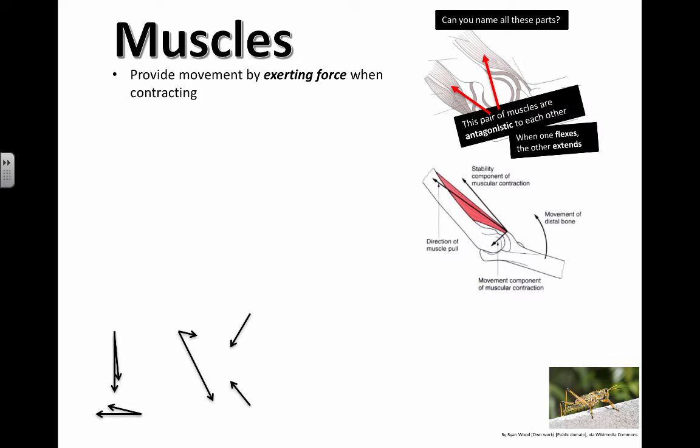Let's take a look at some of these things right here. So muscles, you already know, they provide movement by exerting force when contracting. So only when they actually contract, when these biceps contract, you're actually going to bend this joint. When your triceps contract, this is going to relax, but it's going to cause this joint to straighten out. So muscles provide movement by exerting force only when contracting.